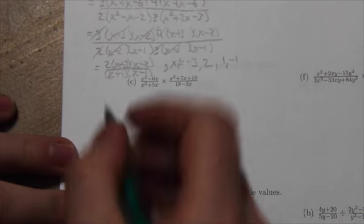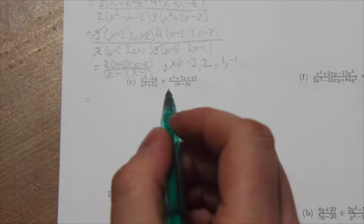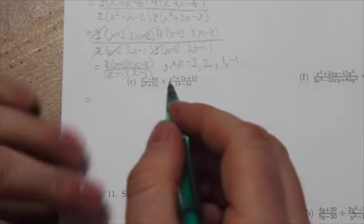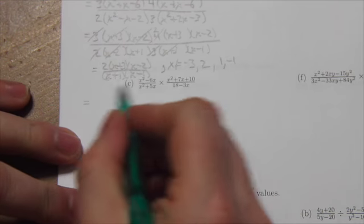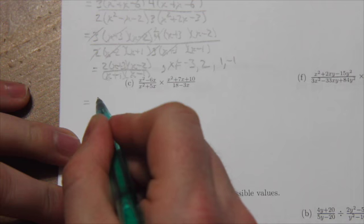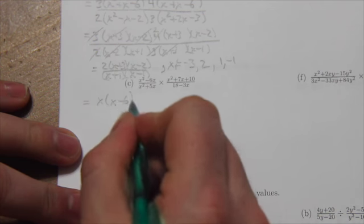All right, 10c. Let's take a look at the first term here. It requires a little bit of factoring, not much there. In that x squared minus 6x, it's just a common factor of x minus 6.